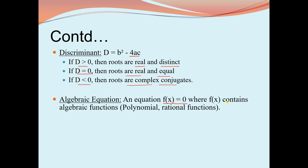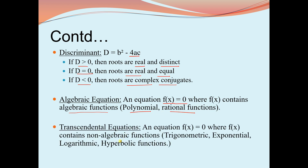An algebraic equation is f(x) = 0 where f(x) contains algebraic functions — polynomial and rational functions are algebraic functions. A transcendental equation is f(x) = 0 where f(x) contains non-algebraic functions such as trigonometric, exponential, logarithmic, and hyperbolic functions.